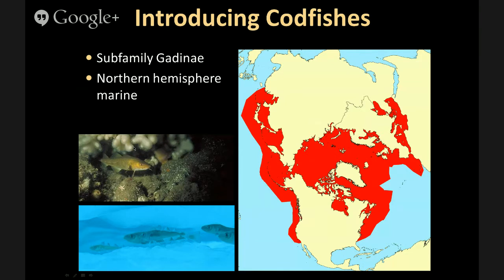The fishes in subfamily Gadinae are distributed across all of the northern hemisphere, shown in red on this map. The great majority are benthic and temperate, like Gadus morhua, shown here in a benthic coral reef habitat. But there are two particularly unusual species: Boreogadus saida and Arctogadus glacialis, which live and forage in gaps in sea ice and are pelagic. Since they live in sea ice, they need to be tolerant of a wide variety of salinities and temperatures.